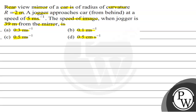So this question is about a rear view mirror of a car with radius of curvature r equal to 2 meter, with a jogger moving at 5 meter per second. The speed of image will be 0.1 meter per second.